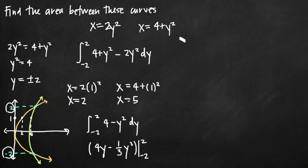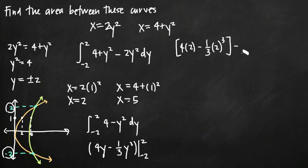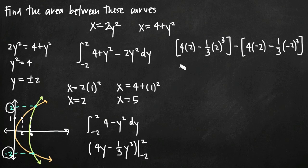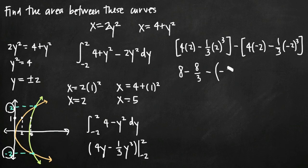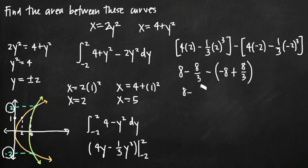Plugging in positive 2 first we get 4 times 2 minus one-third times 2 cubed. Then we subtract what we get when we plug in the lower limit: 4 times negative 2 minus one-third times negative 2 cubed. Simplifying: 4 times 2 is 8, 2 cubed is 8 times one-third is 8 thirds. 4 times negative 2 is negative 8, and negative 2 cubed is negative 8 times negative one-third is positive 8 thirds. So we get 8 minus 8 thirds, minus negative 8, minus 8 thirds.